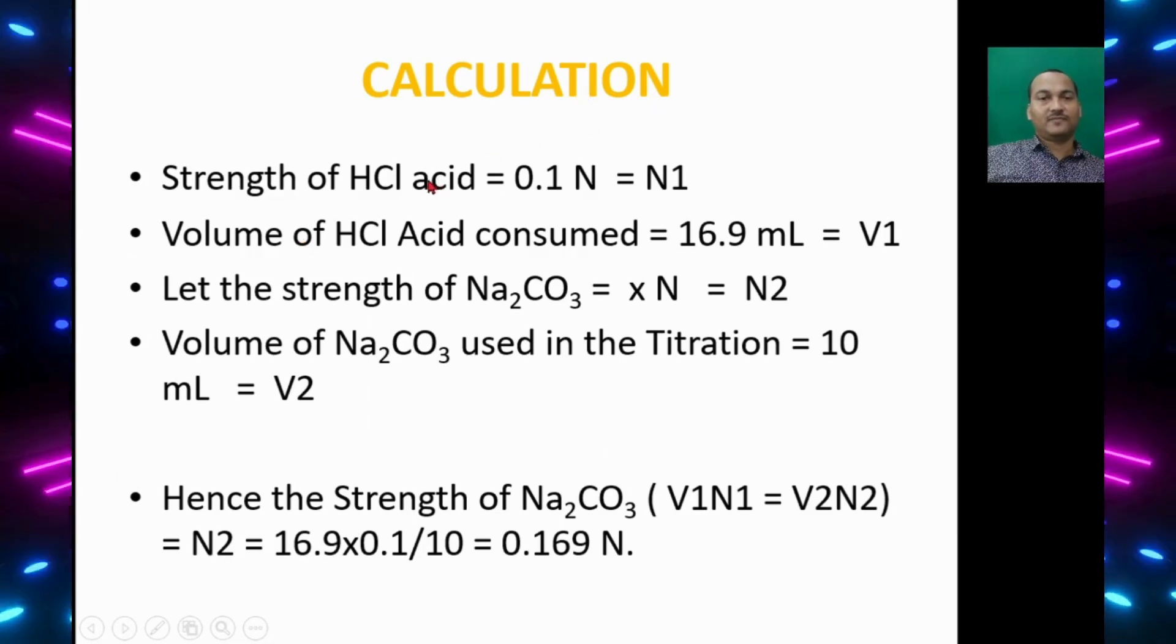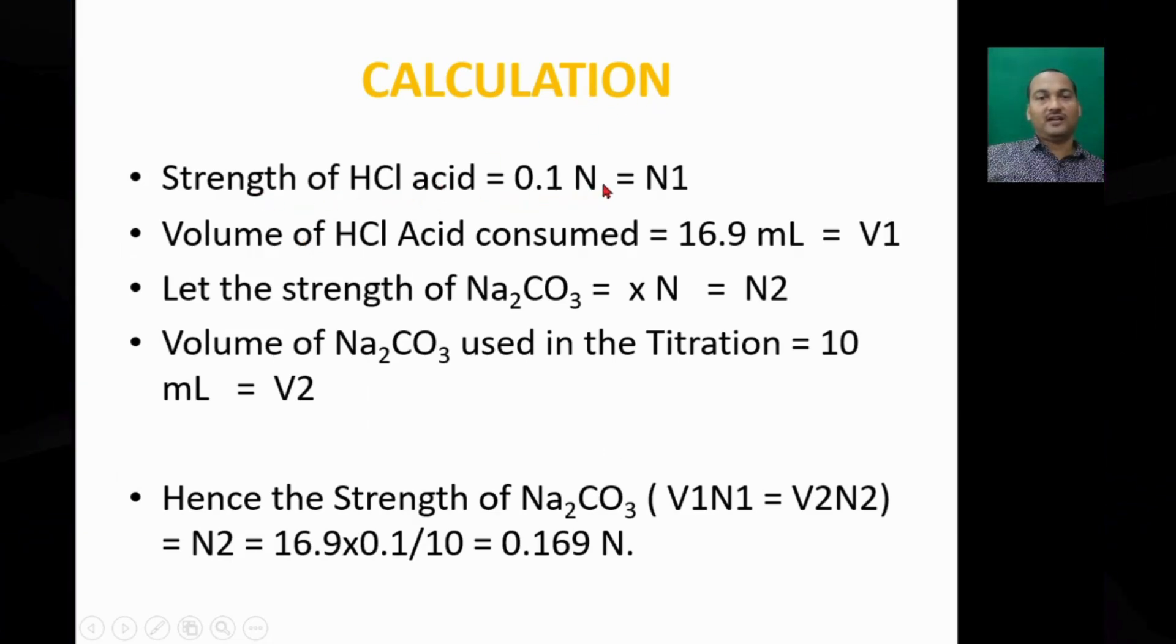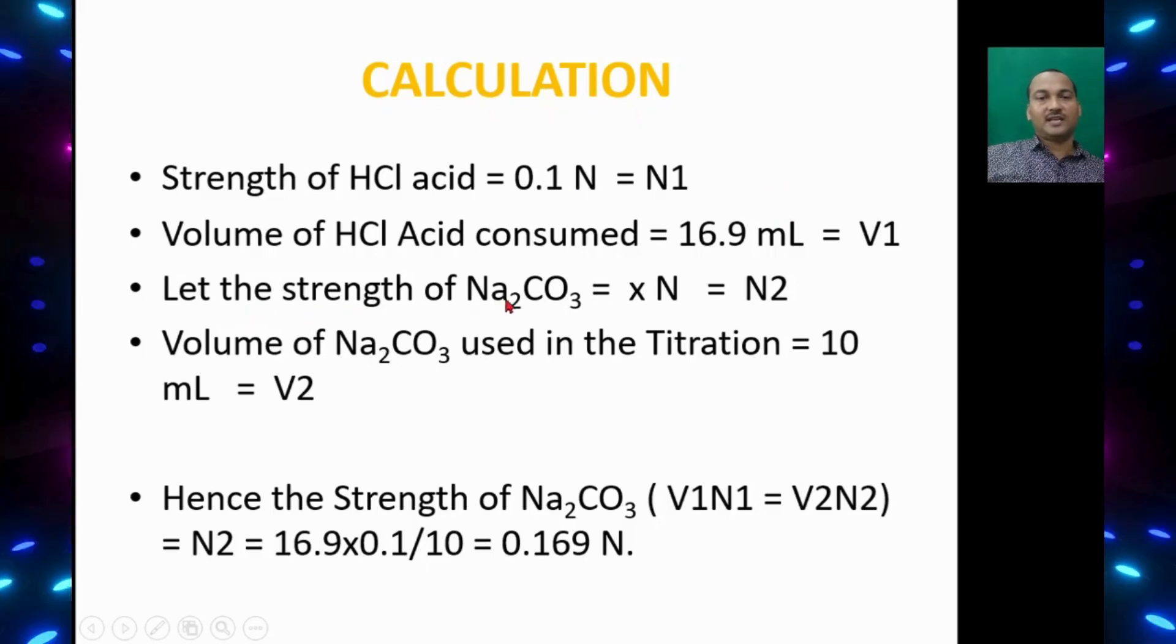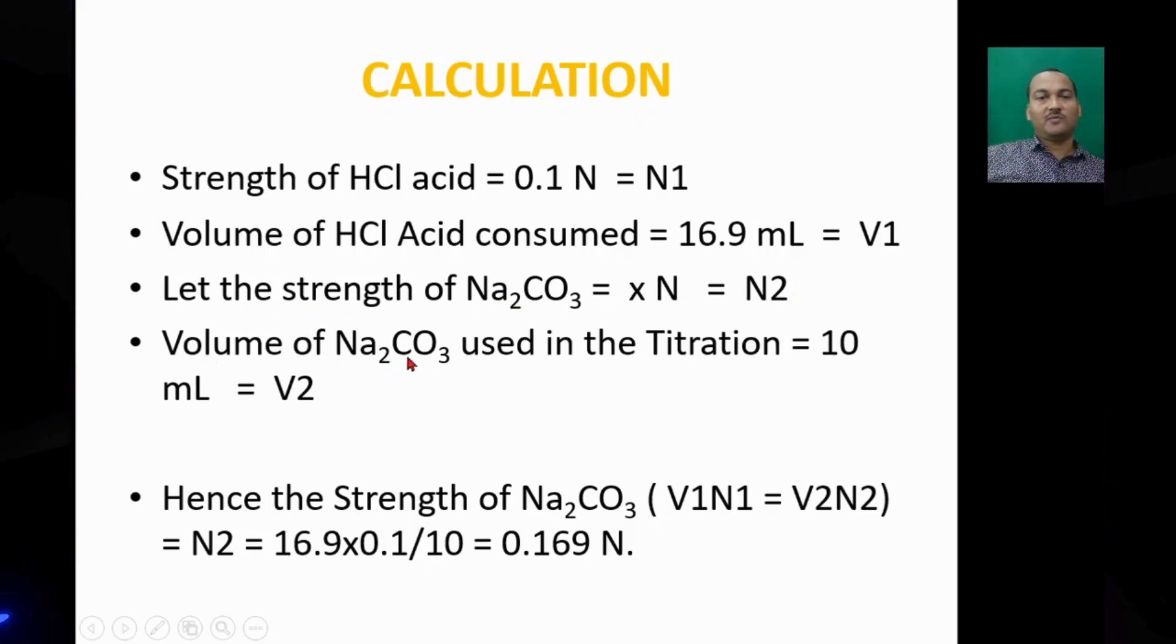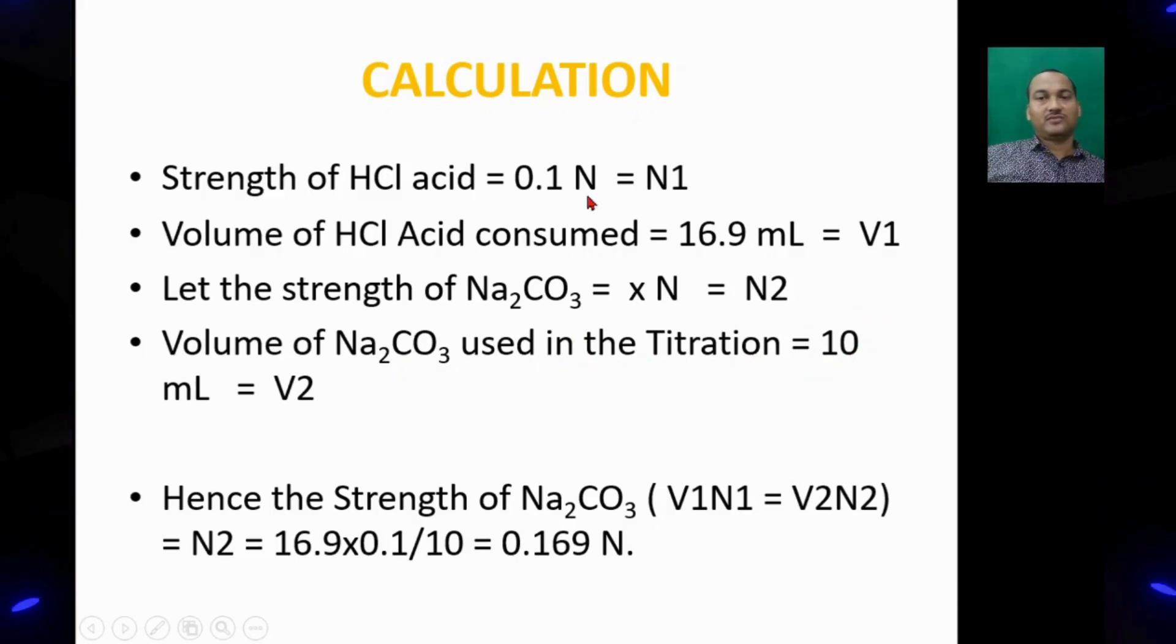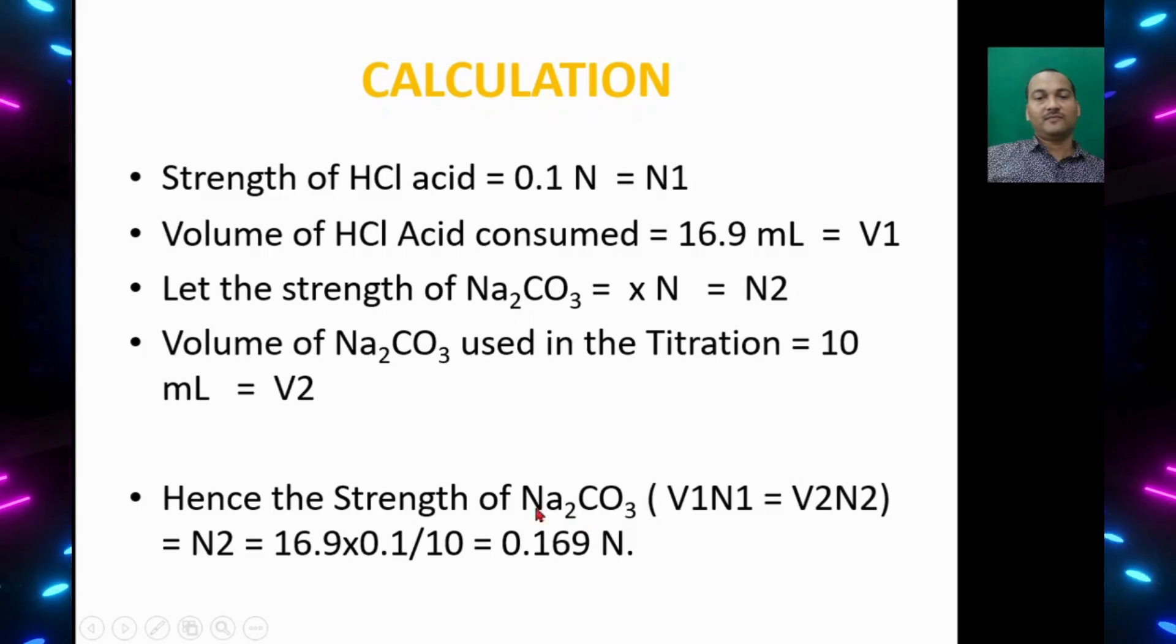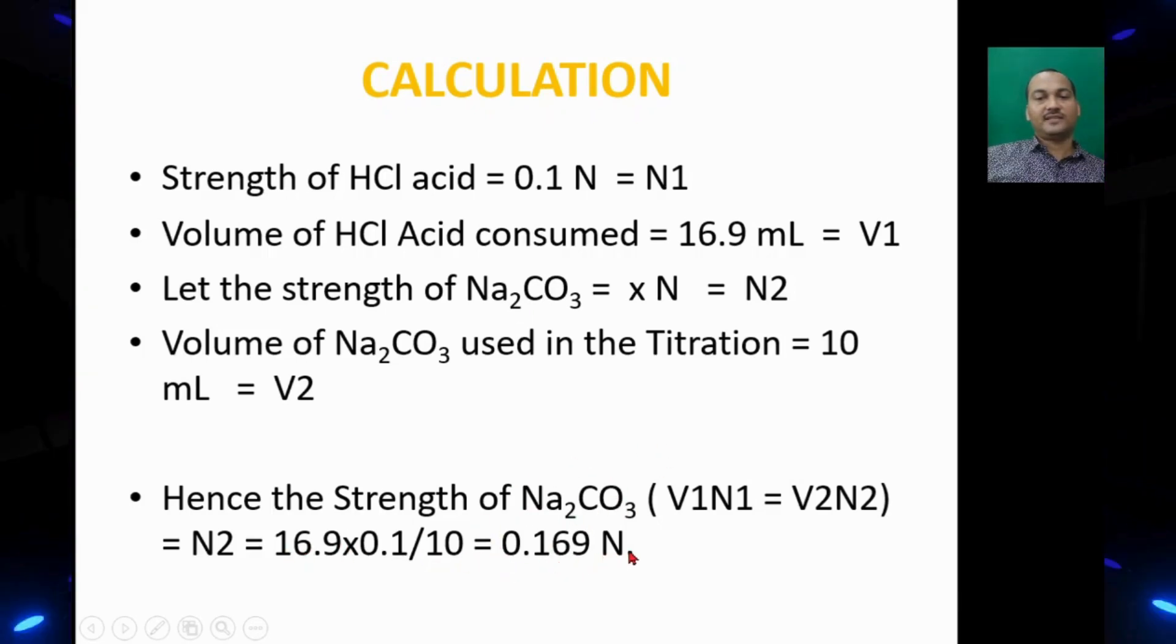Let's talk about calculation. Strength of HCl is 0.1N or N by 10. Volume of HCl consumed is 16.9 ml from titration. Let the strength of sodium carbonate be x normal, N2. Volume of sodium carbonate used in titration is 10 ml. By using the equation V1N1 equal to V2N2, we can find out the strength of sodium carbonate, which is 0.169 normal.